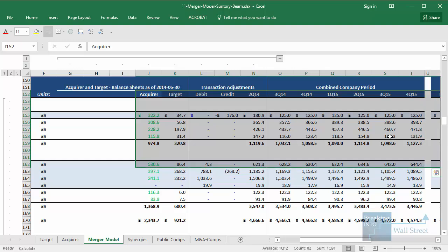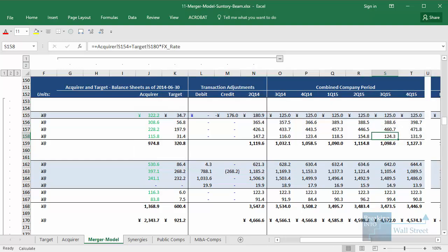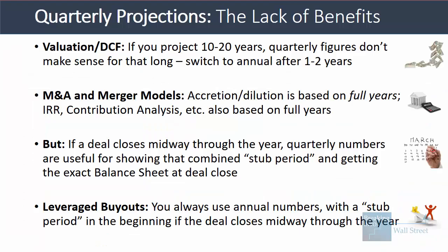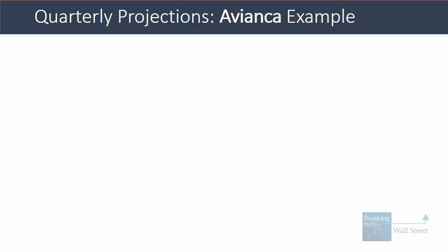We just adjust them and then use quarterly numbers going forward for the balance sheet. And then in leveraged buyouts, you're pretty much always going to use annual numbers. You might have a stub period of a few months or a quarter if the deal closes midway through the year, but beyond that you're always going to switch to annual numbers. Now let's go into part two and look at some of the key differences in quarterly projections, when they could actually be useful, and how you have to set up the model a bit differently.